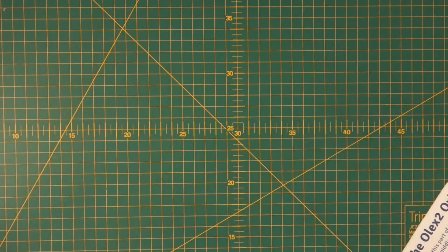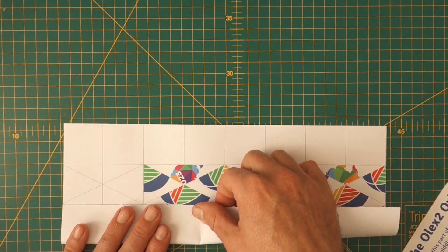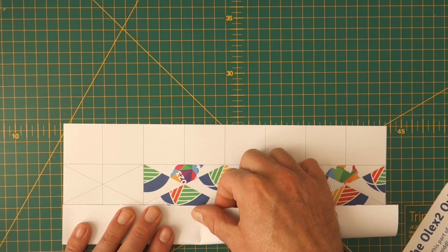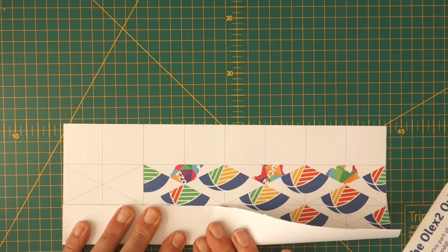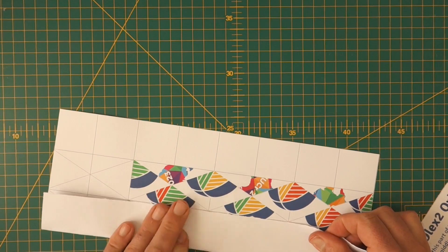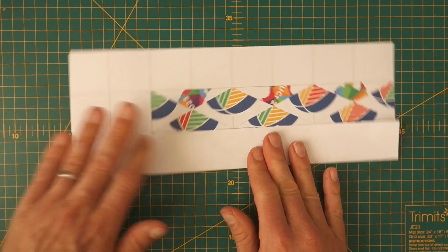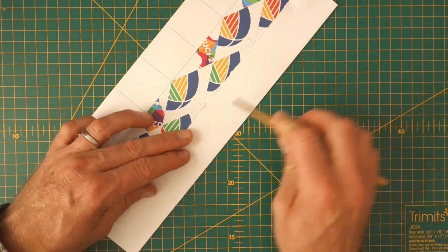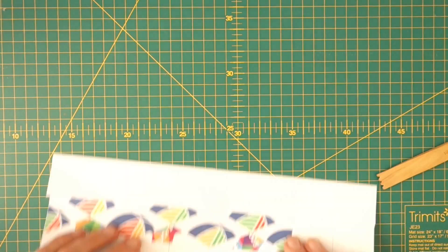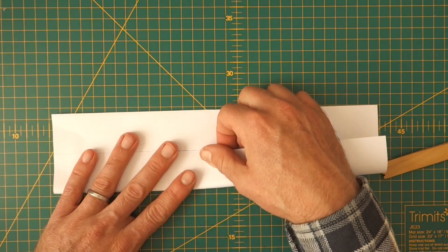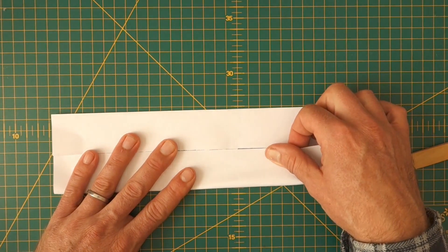So now fold this edge to the middle. Leave it a bit of space so it just comes in here. Fold it in the middle and again give it a good crease and again on that side.